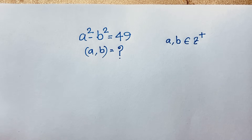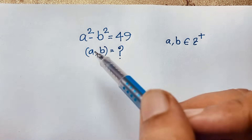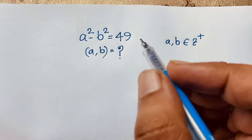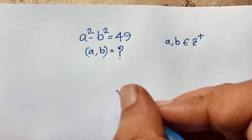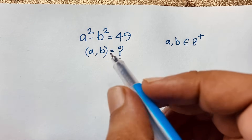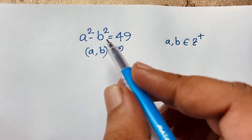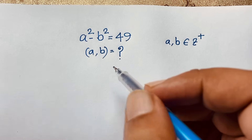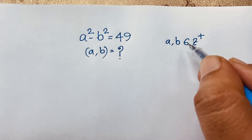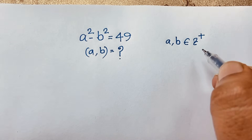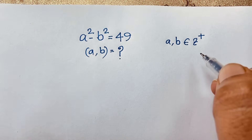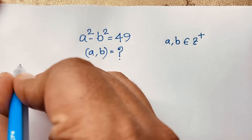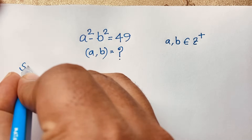Hello everyone. In this video we solve a nice math problem. The question is a² - b² = 49. We'll find out the values of a and b, where a and b are positive integers. Let's start our solution.